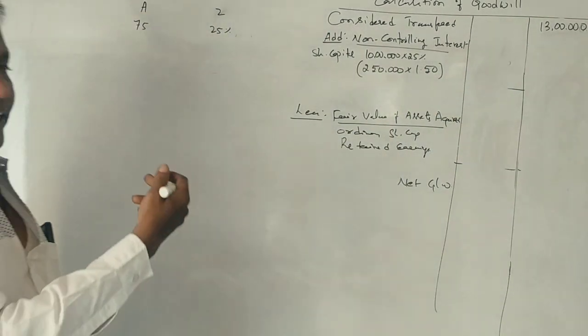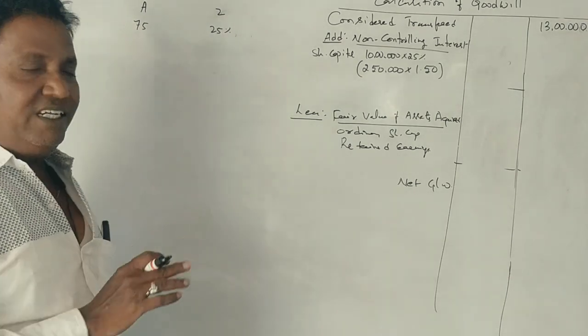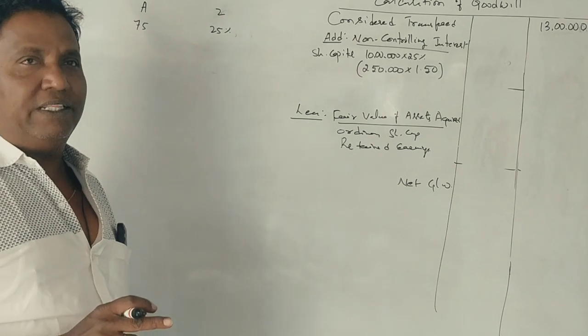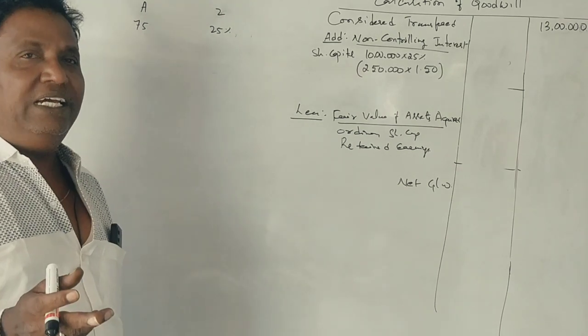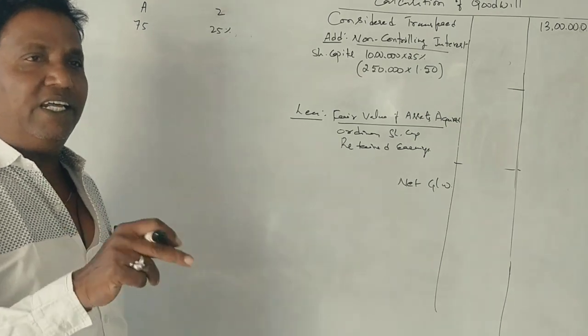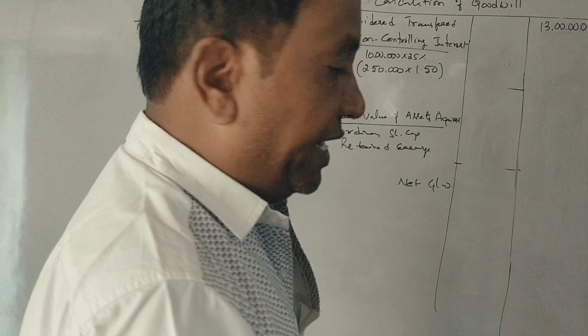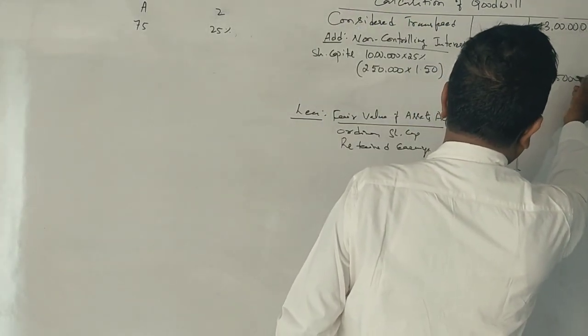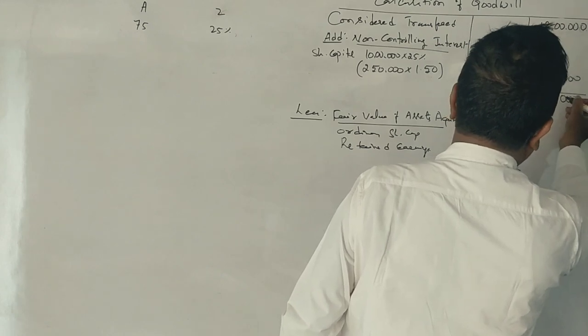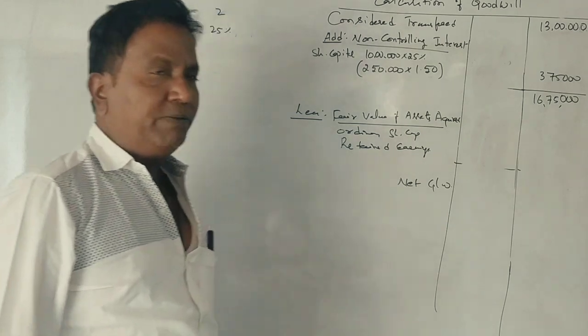Now, the non-controlling interest calculation. 25% of shares at market rate of 1.50 rupees equals 3,75,000 rupees. Adding this gives 16,75,000 rupees.